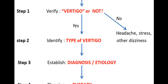Once a person complains of dizziness, approach them in steps. Step one: find out whether it is vertigo or not. If a person has headache, mental stress, light-headedness, unusual complaints like palpitations, think in terms of non-vertigo conditions. Step two: once you suspect vertigo from history, identify whether it is central or peripheral vertigo. Step three: confirm the diagnosis of vertigo and its etiology, then decide regarding treatment.